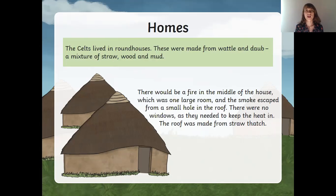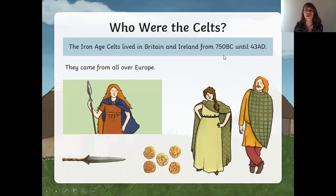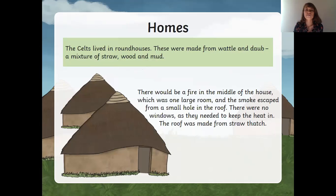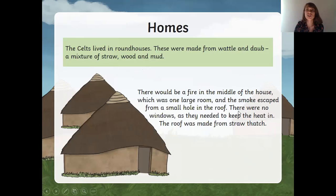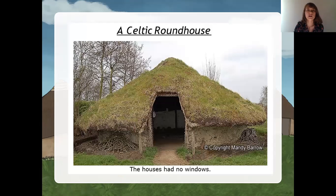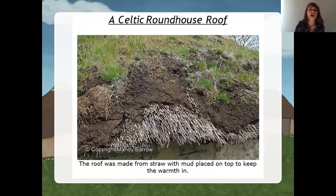Nowadays in winter time we just press a button on our heater and our house is warm. But back then, a long long time ago in Britain and Ireland, when they built their houses, they had to think about how to keep the warmth in. So they built their houses with no windows. The roof was made from straw and mud placed on top to keep the warmth in.